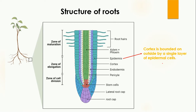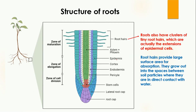Outside the cortex, the epidermis is present — a single layer of cells also known as epidermal cells. Sometimes there are extensions of the epidermal cells known as root hairs. Root hairs provide a large surface area for absorption, growing out into the spaces between soil particles, allowing the root to absorb more water and salts from the soil.